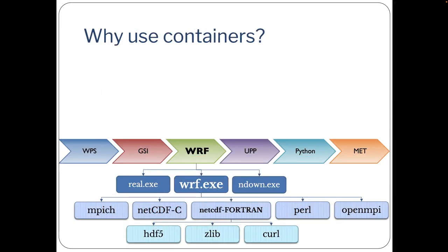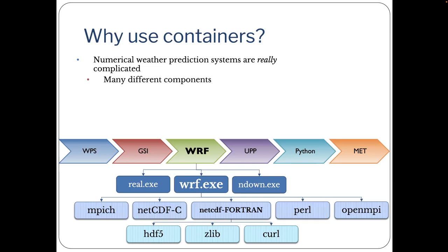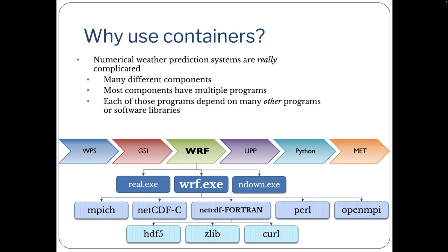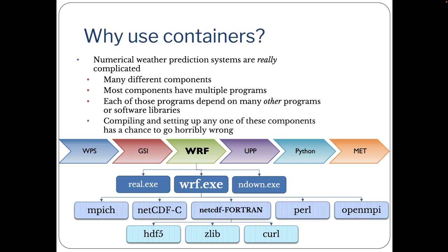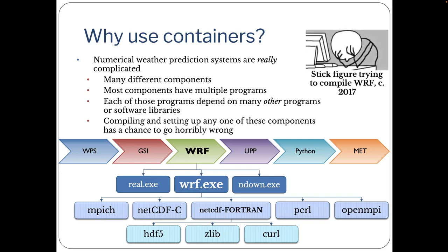So why should we use containers? First, numerical weather prediction systems are really complicated. There are many different components, and most of these components have multiple programs. Each of those programs depends on many other programs or libraries, so compiling and setting up any one of these components has a chance to go horribly wrong. This schematic is just one example of the series of dependencies in the NWP system.